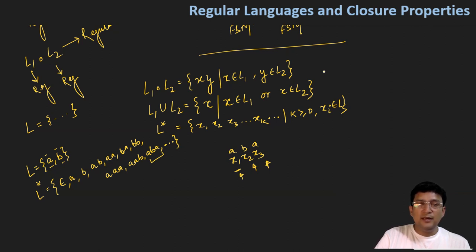This means that if we have L star, it will also be a regular language. We can create an automaton for it. So L star, which is the closure of language L, will also be a regular language.